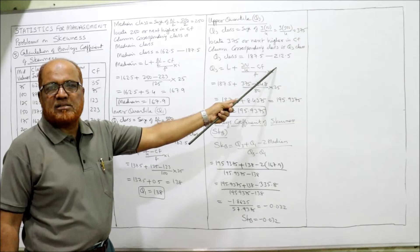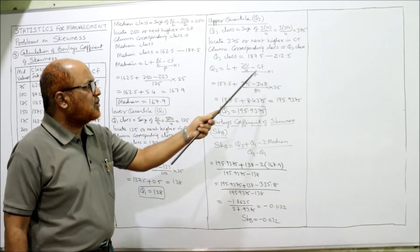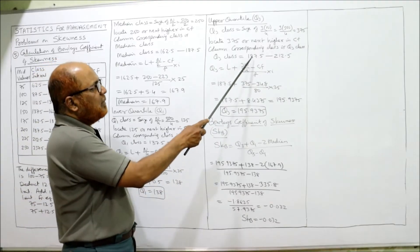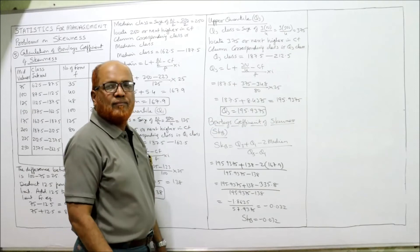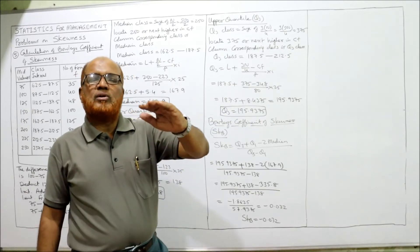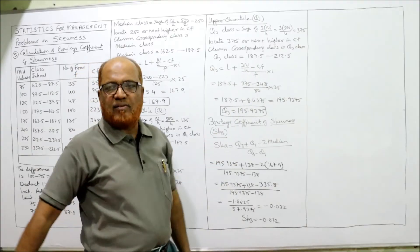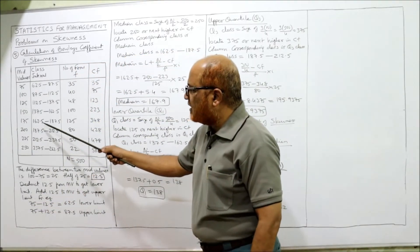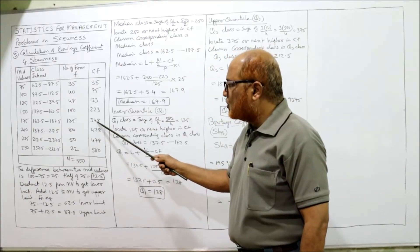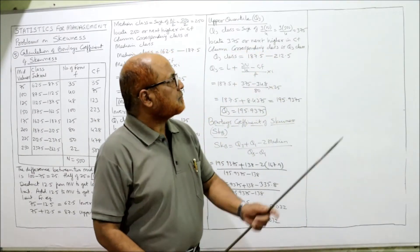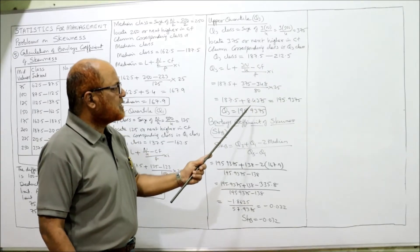The class corresponding to CF 428 is 187.5 to 212.5, which is the Q3 class. Applying the Q3 formula: Q3 = 187.5 + [(375 − 348) / 80] × 25 = 187.5 + 8.4375 = 195.9375. Q3 = 195.9375.